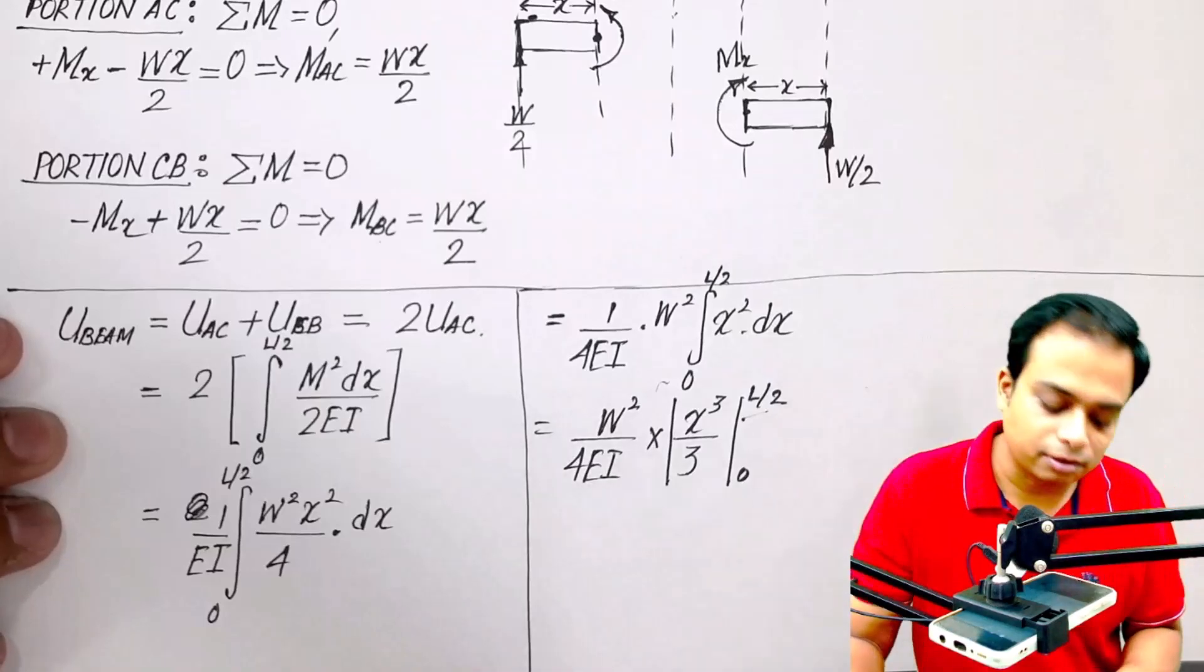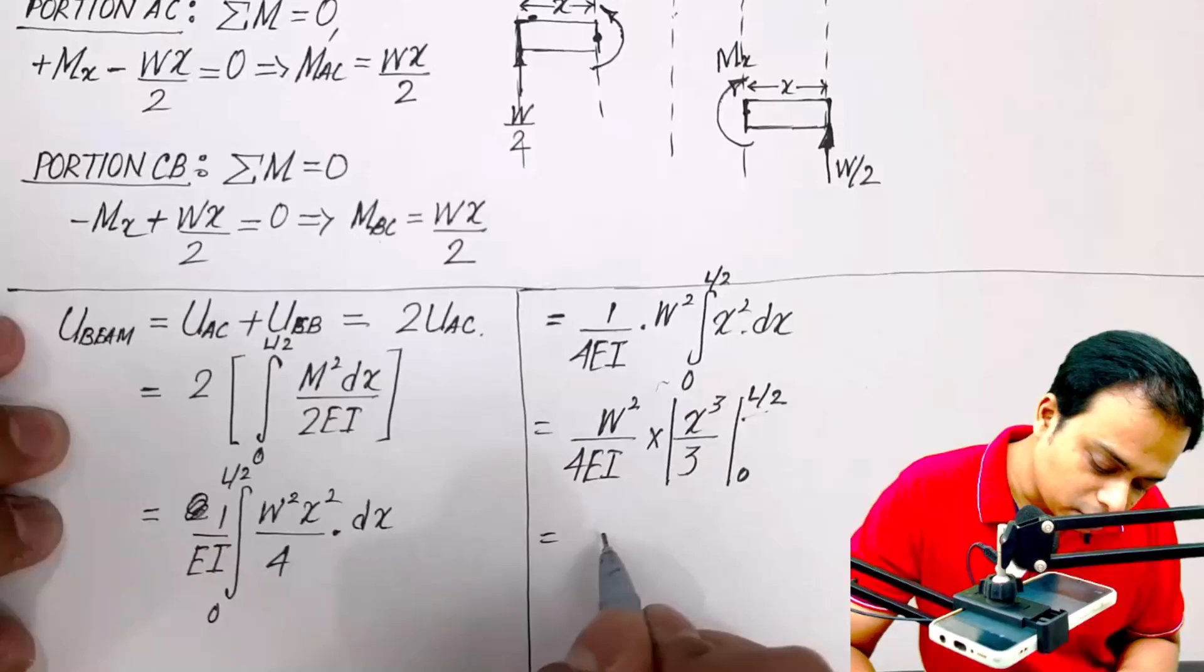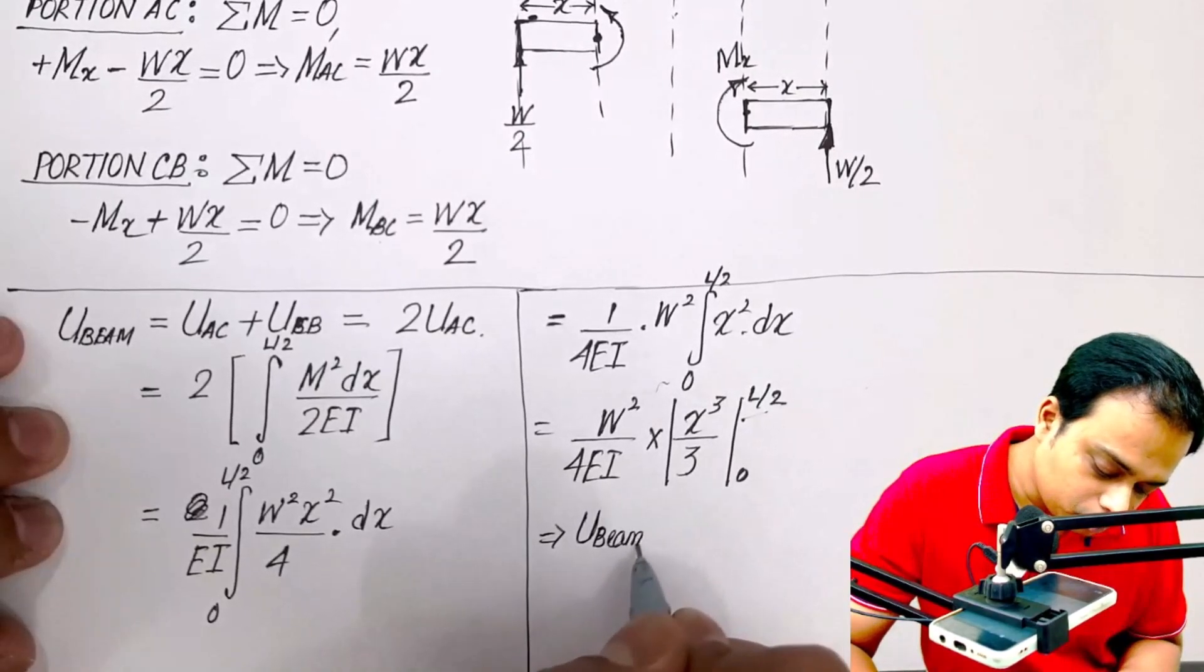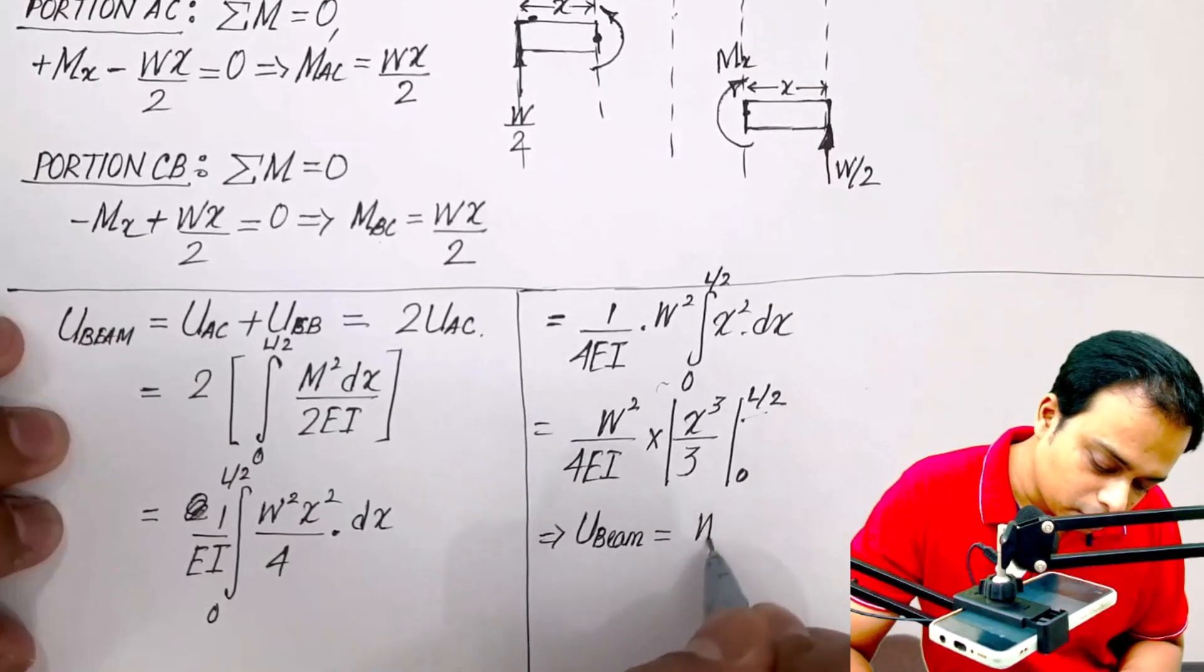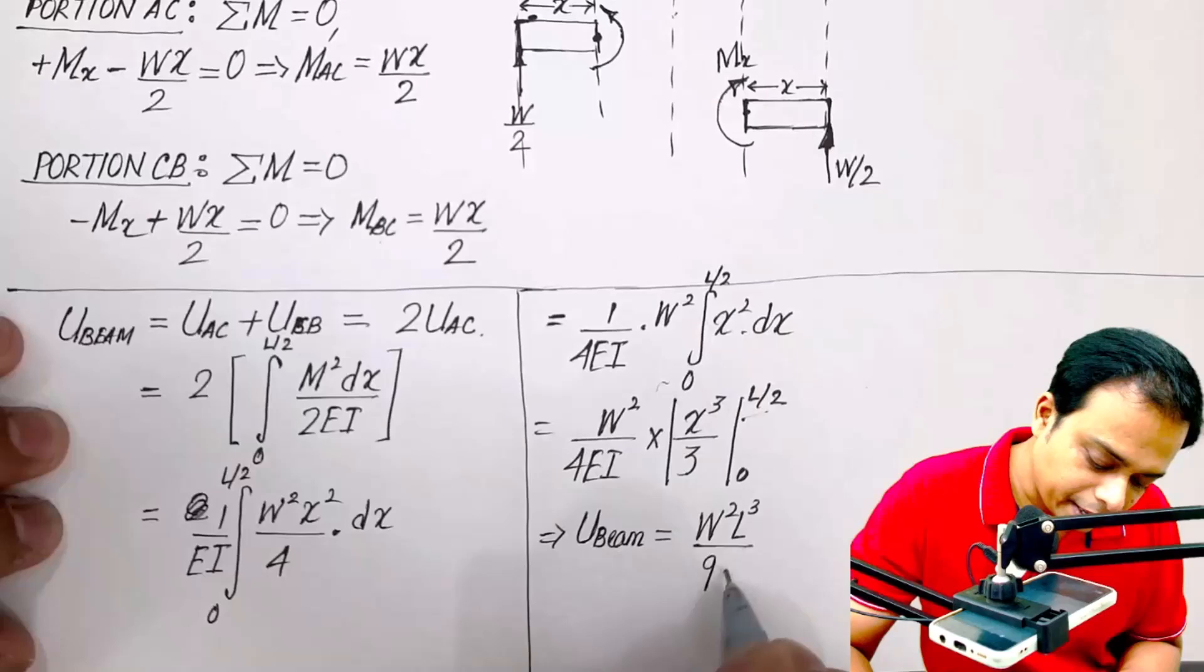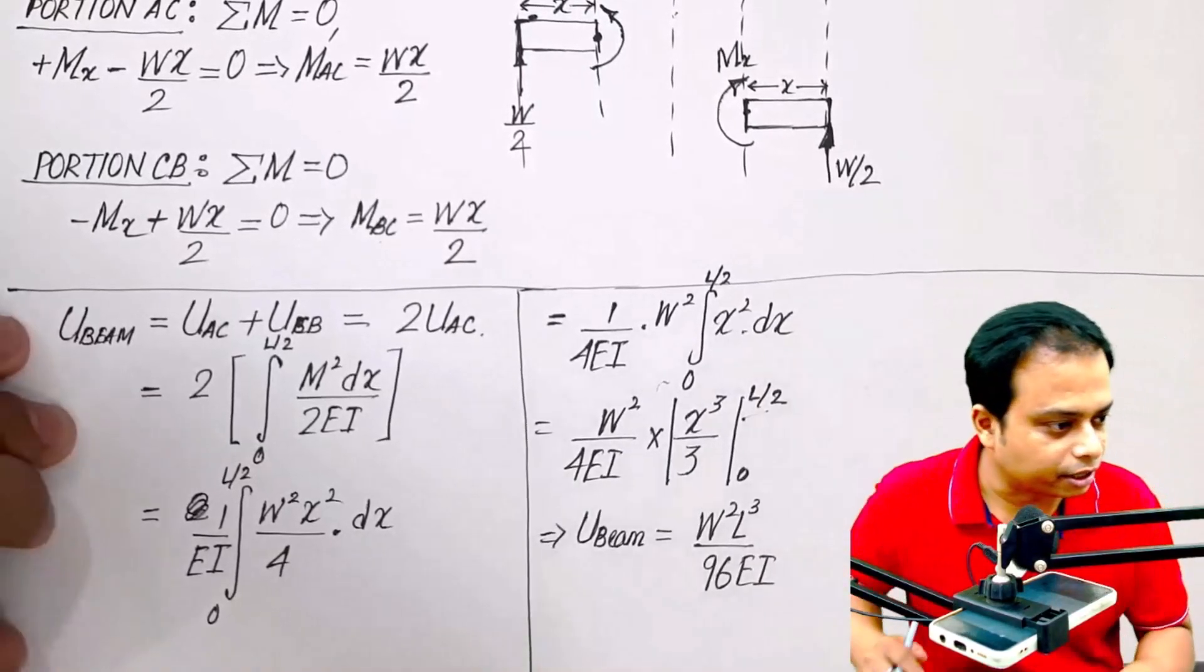This is equal to 1 over 4EI, let me write this as W squared into x squared will become x cube over 3, and the limits are from 0 to L by 2. So please note, L cube by 8, 8 times 3 is 24, and 24 into 4, 20 into 4 is 80, 4 into 4 is 16, 80 plus 16 is 96. Wonderful! So the final result is strain energy of the beam is equal to W squared L cube over 96 EI. Let me make a quick check.